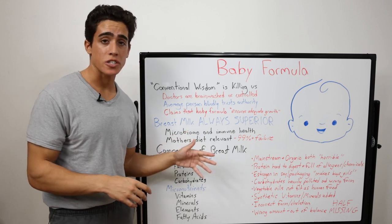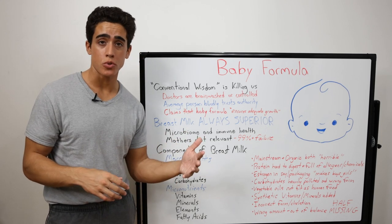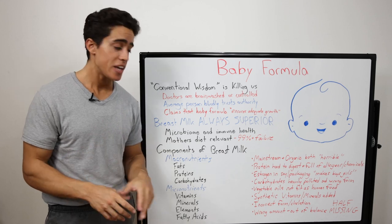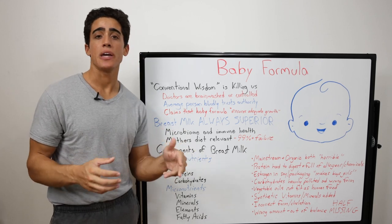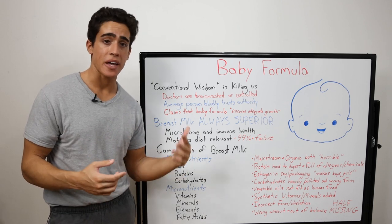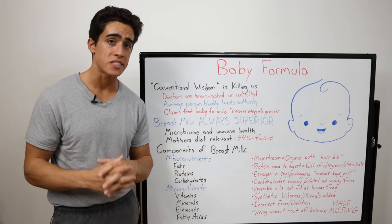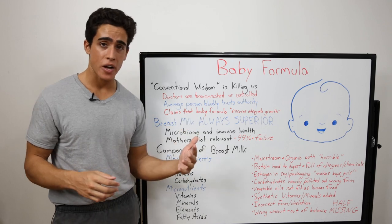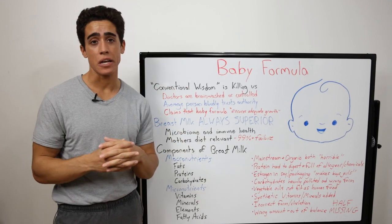Whether it's starch in the form of maltodextrin or sucrose in the form of brown rice syrup, it will certainly stress the baby's pancreas and liver to process. Plus, the chemicals involved in growing and processing the corn or rice into a sugar syrup or extract are going to be adding that much more oxidative damage.